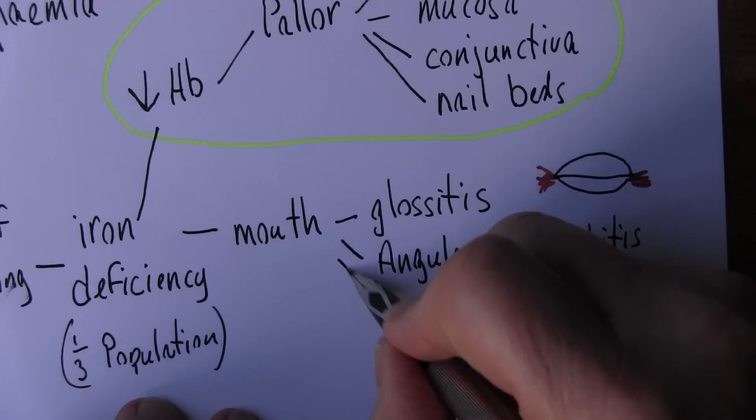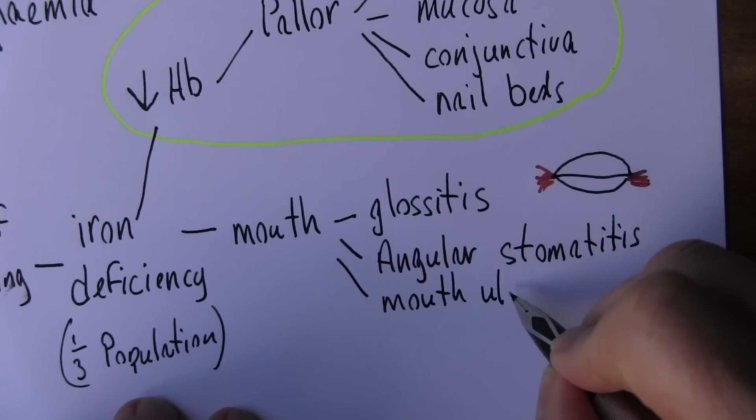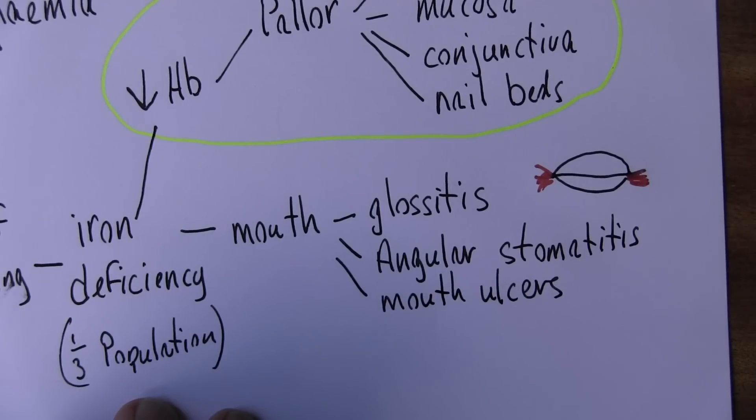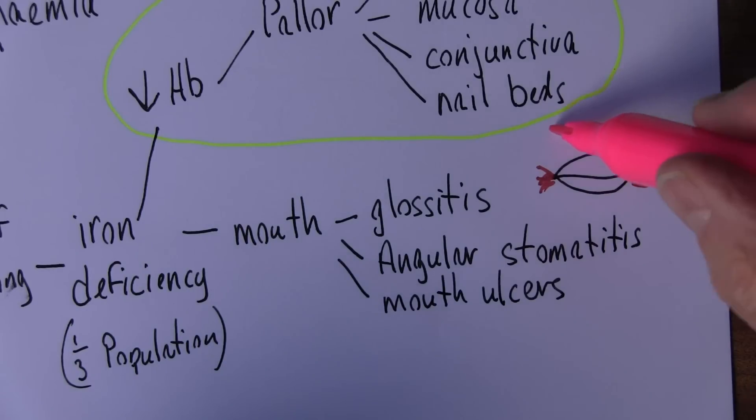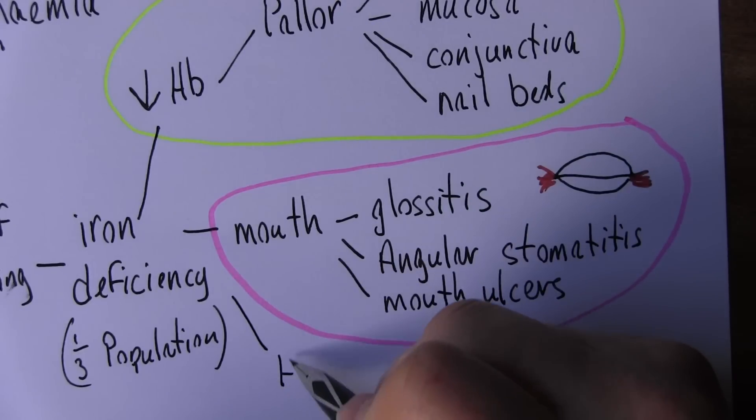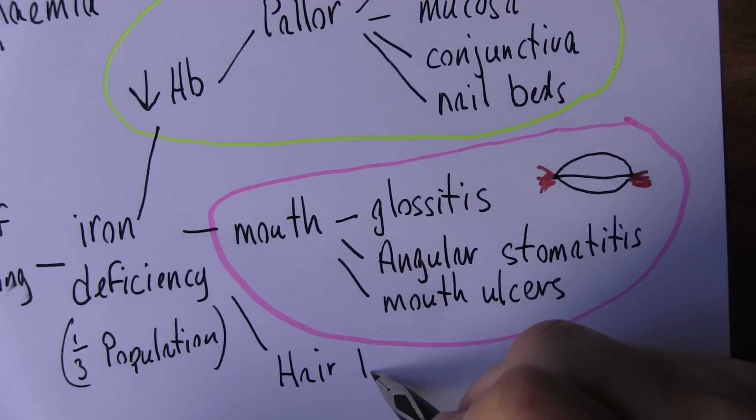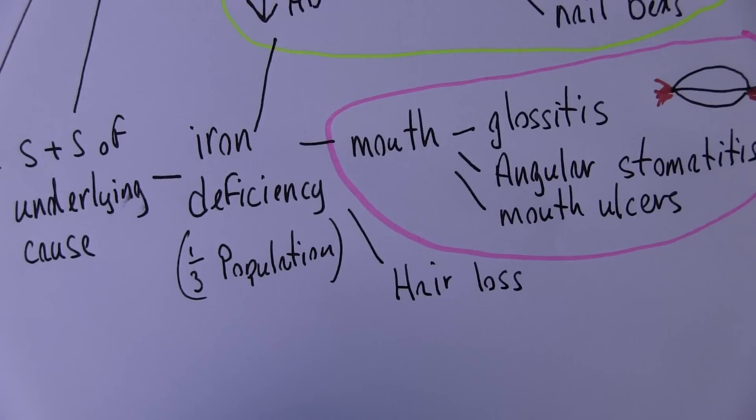And also affecting the mouth, mouth ulcers are more common. So again these are features of the iron deficiency, rather than features of the anemia, these ones affecting the mouth. Another feature of iron deficiency is hair loss. Always worth considering iron deficiency in hair loss.